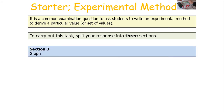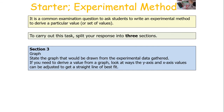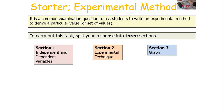The third section of your response should be talking about the graph you would draw. You would state the graph that would be drawn from the experimental data gathered previously, and then, if you need to derive a value from a graph, look at the ways the y- and x-axis values can be adjusted to get a straight line of best fit. Then put the experimental equation into the form y = mx + c and work out how to calculate the wanted value.